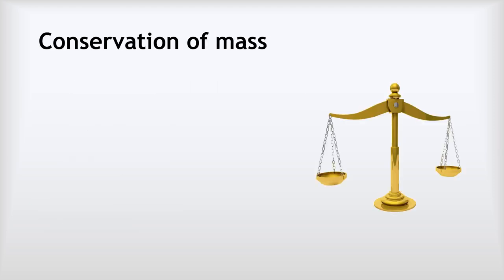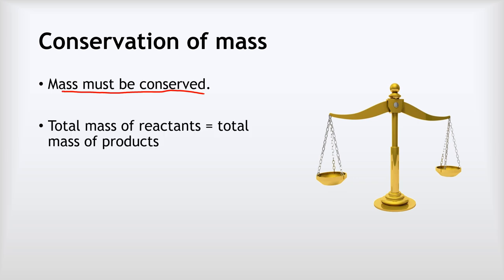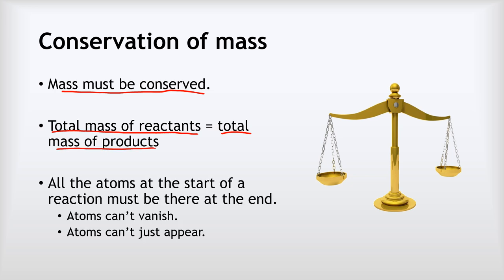Let's start with the idea of conservation of mass. Conservation of mass is a really important principle that says mass must be conserved in a chemical reaction. What that means is that the total mass of reactants at the start of a reaction must be the same as the total mass of products produced. If they weren't the same, it would mean that atoms were vanishing or appearing out of nowhere, and neither of those things is possible.